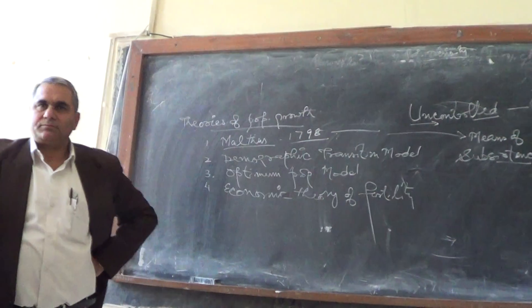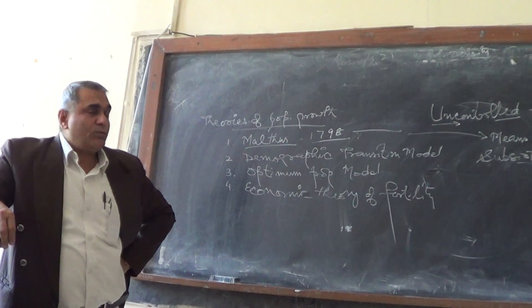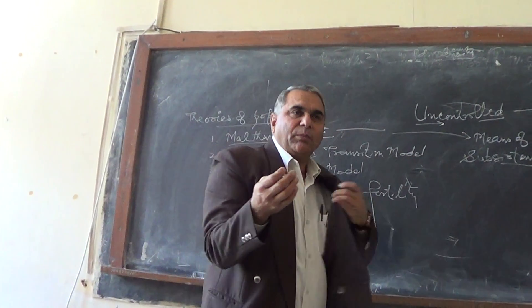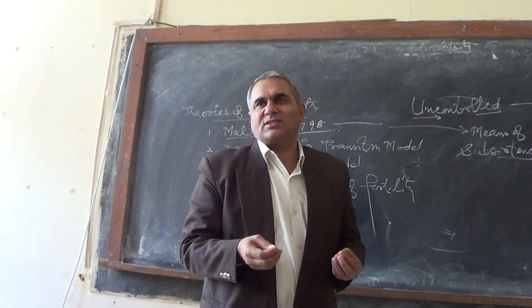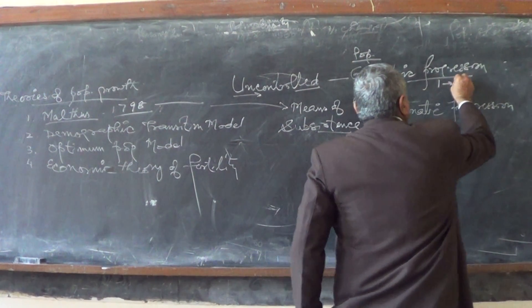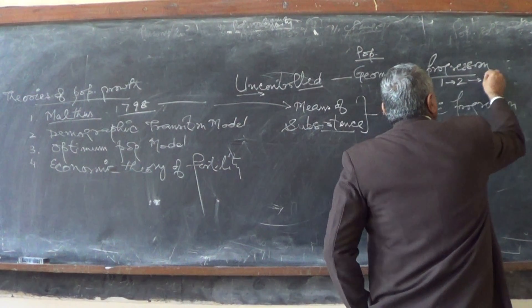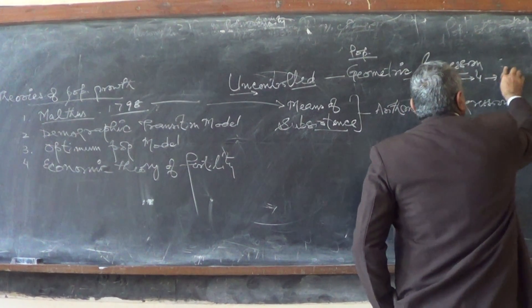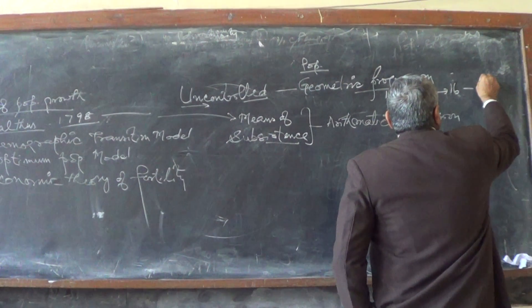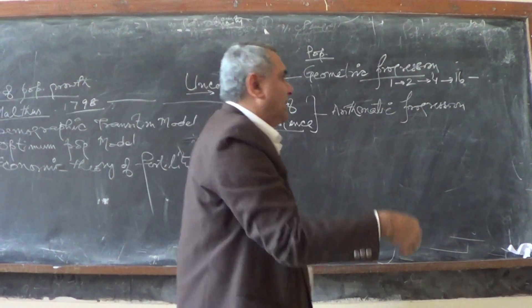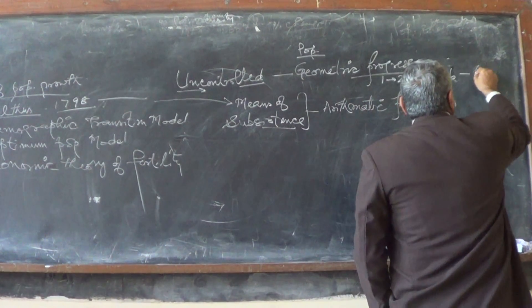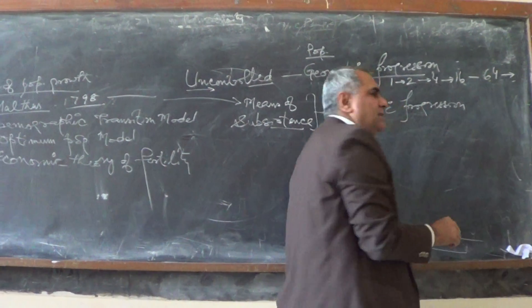If population needs to be sustained, it requires food. Geometric progression means: 1, 2, 4, 8 — it multiplies like that. Population will increase in this manner.